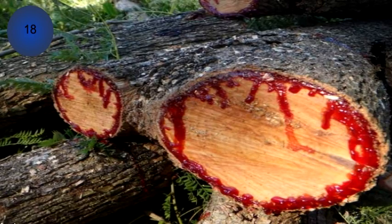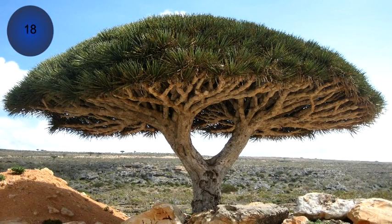There's a tree that bleeds red sap. The Dracaena cinnabari. It only grows in Socotra.